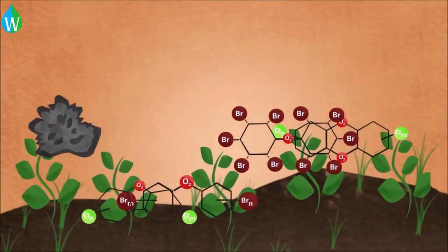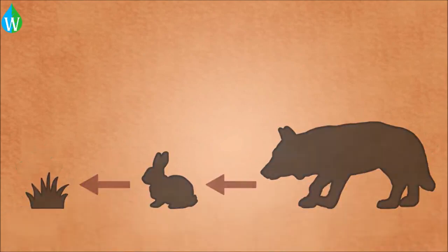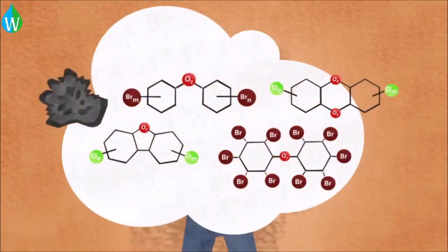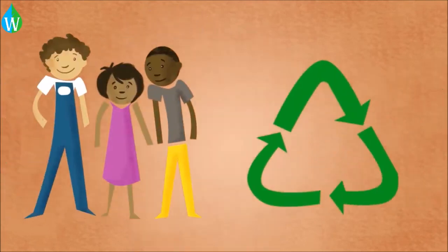Also, plants can take up these chemicals, allowing toxic chemicals to enter the food chain. Finally, if the chemicals are airborne, there are problems with us inhaling them. There are also social issues connected to recycling.